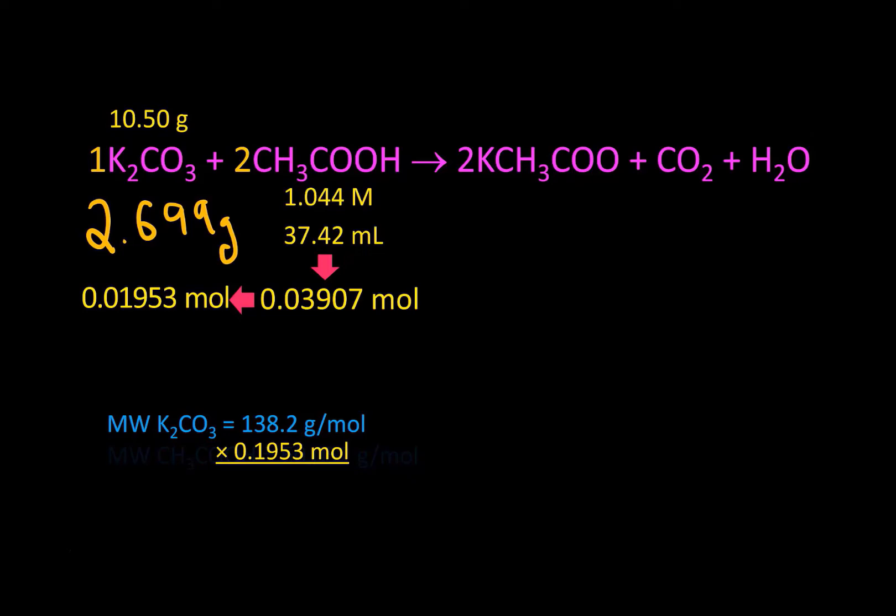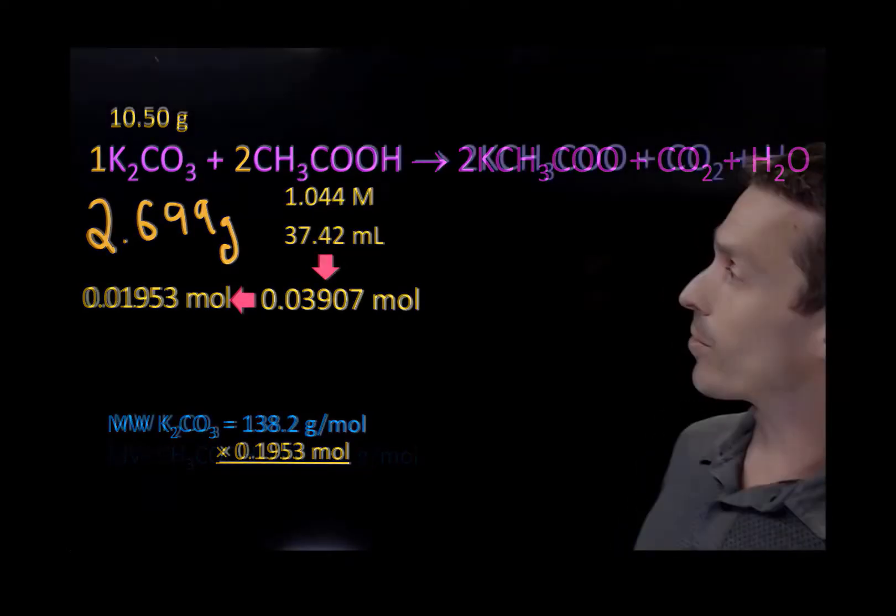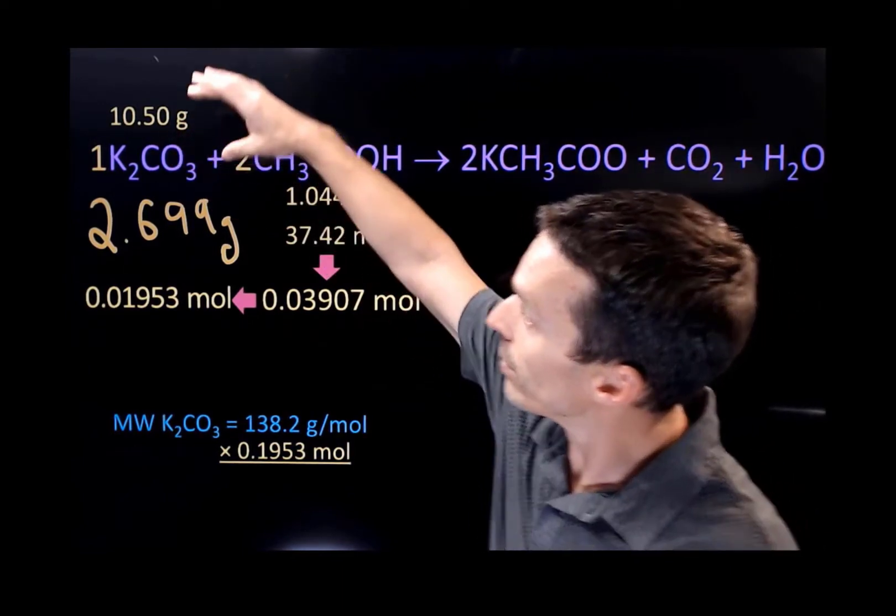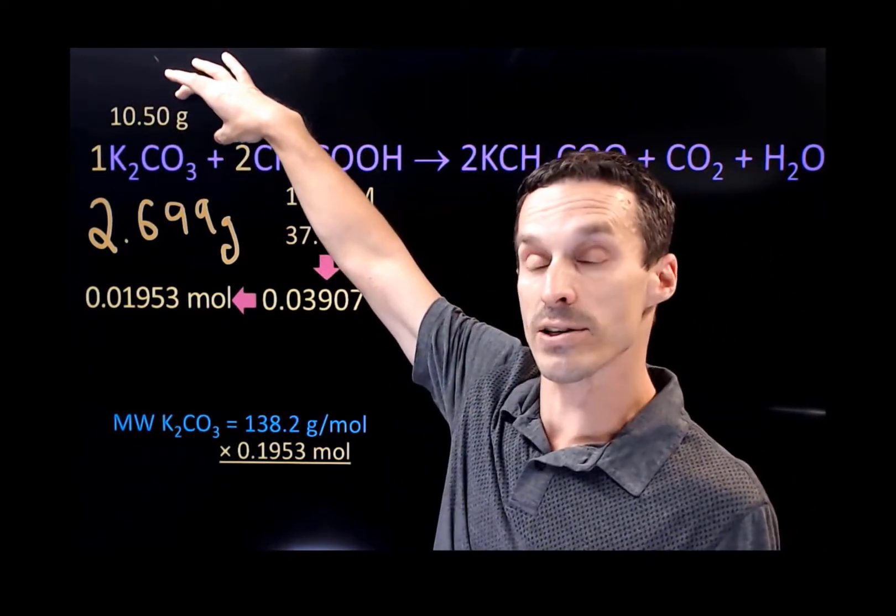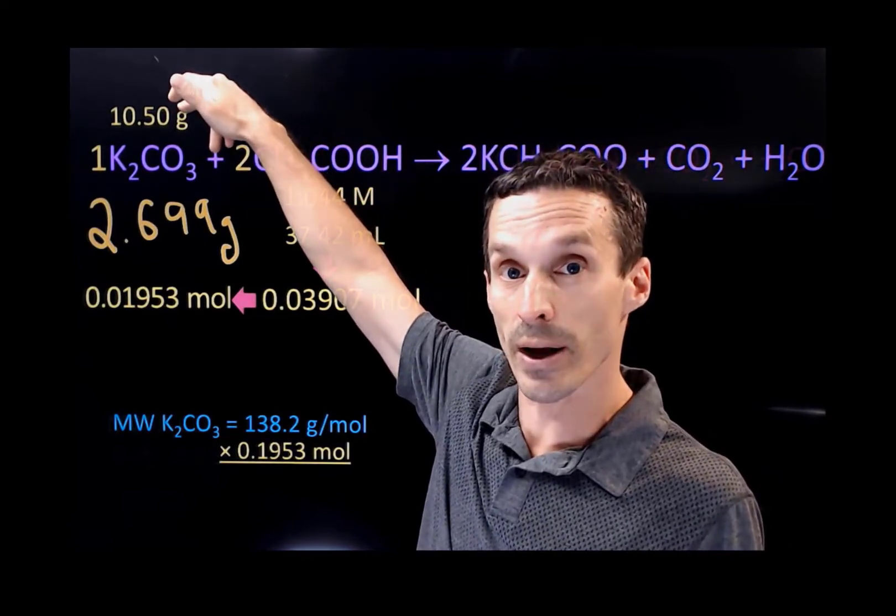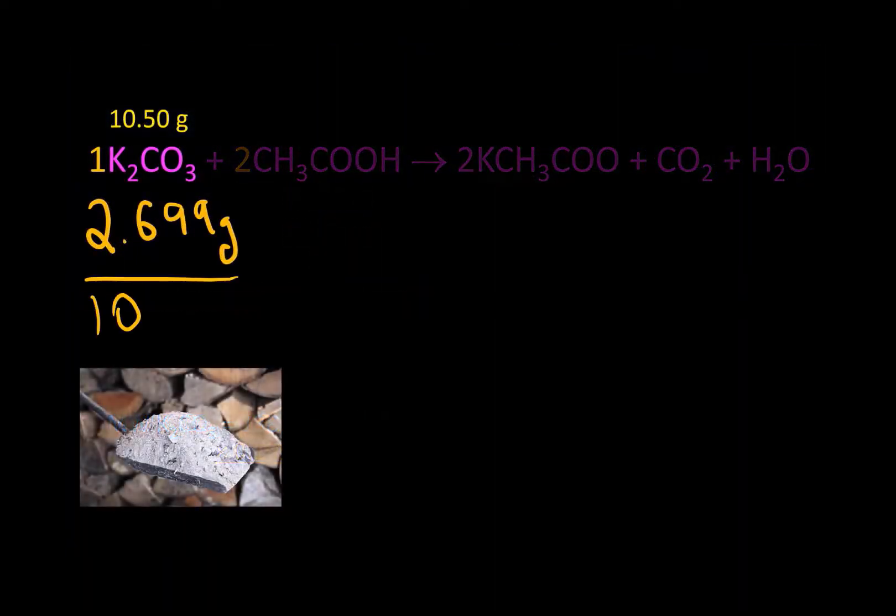So, that works out to be 2.7 grams, approximately. And, the problem's almost done. Until you go back and actually read what the question is asking, which was to say, what is the weight percent of potassium carbonate in the potash? In other words, what I'm relating is the mass of the pure potassium carbonate divided by the total mass of the potash that we have in our sample. That's where this number is finally going to come into our calculation. So, we can express the weight percent as such. And, because we're asking for a percentage, we'll multiply it by 100. It comes out to be 25.7%.